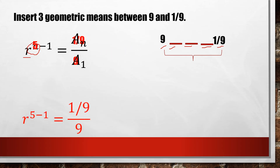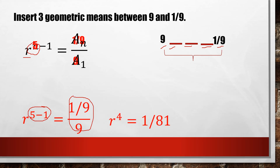Writing our equation: R raised to 5 minus 1 equals 1 over 9 divided by 9. Simplifying the exponent on the left side and the right side simultaneously, we get R raised to 4 equals 1 over 81. We then extract roots on both sides — since the exponent of R is 4, we use the fourth root. The fourth root of R raised to 4 and the fourth root of 1 over 81 gives us positive and negative 1 over 3.